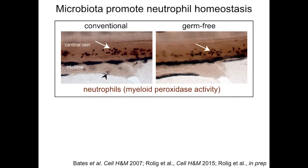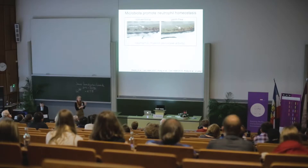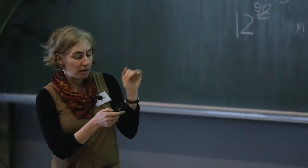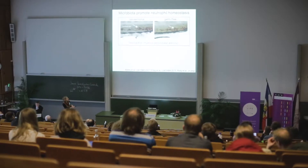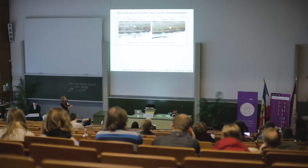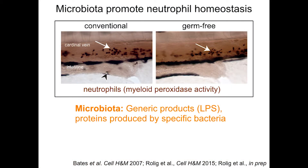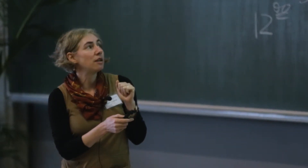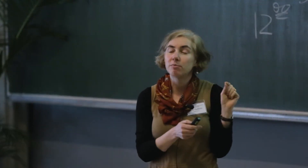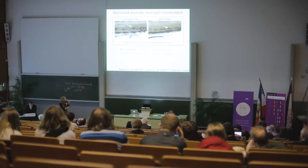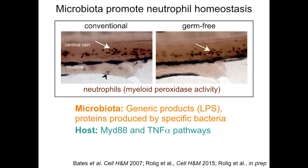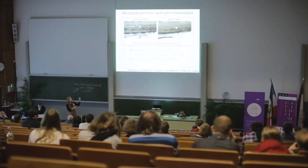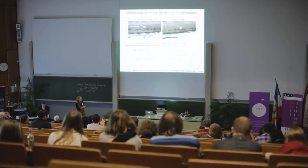Another trait we've looked at a lot is the associated immune cells within the intestine — specifically neutrophil cells, which are some of the first cells to respond to an infection. We've shown that just the normal homeostatic level of neutrophils in the intestine is dependent on the presence of a normal gut microbiota. There are very few myeloperoxidase-positive neutrophils in the gut epithelium of germ-free versus conventional animals. Generic signals such as LPS are sufficient to induce recruitment of these cells, but we've also shown that certain bacteria produce very specific secreted proteins that modulate the response of these neutrophils, involving MyD88 signaling and tumor necrosis factor signaling pathways.